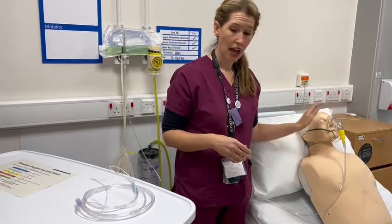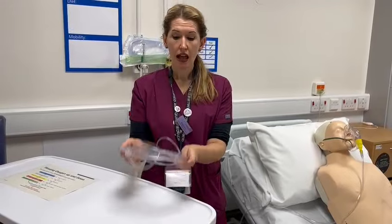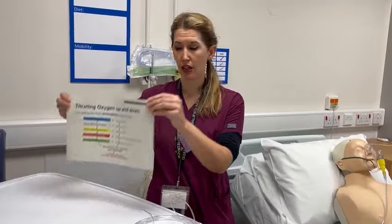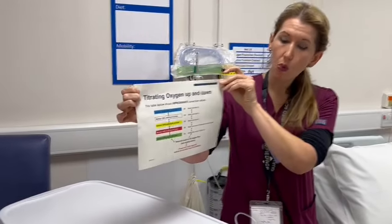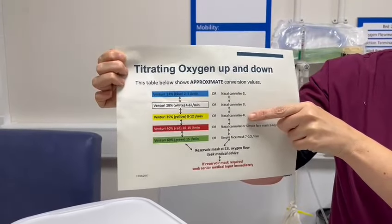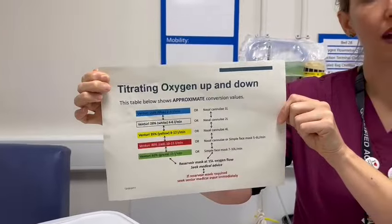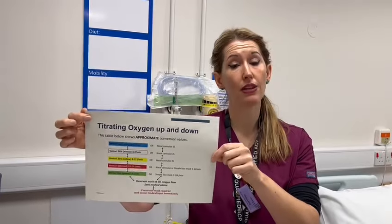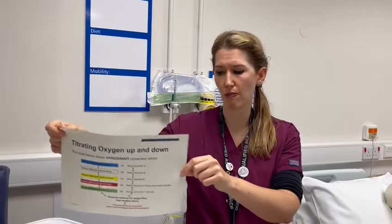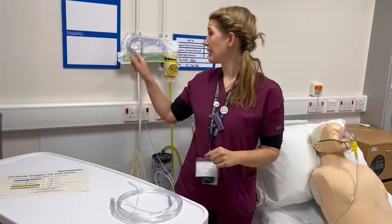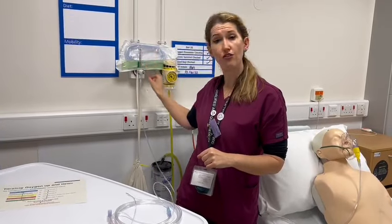So what we have an example of here is a patient that is on 35% and we want to convert them to nasal cannula. To make sure that we do the right conversion, there are useful charts that are available. This chart indicates to us what amount of flow needs to go through the nasal cannula for our 35%. You will find this available on our intranet within Medicines Management, and you'll often find these charts attached to many of the oxygen machines as well, just as a prompt and reminder. So for our 35%, they've currently got 8 litres coming through the oxygen flow meter.